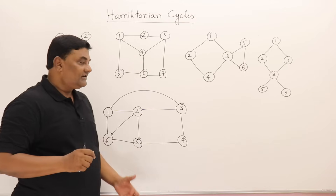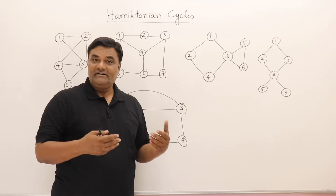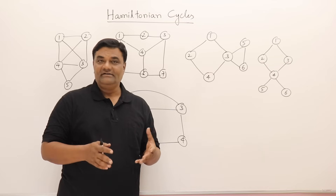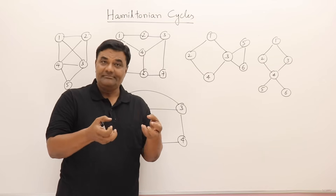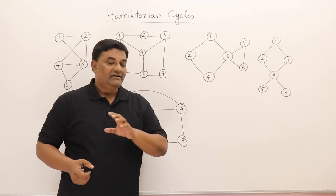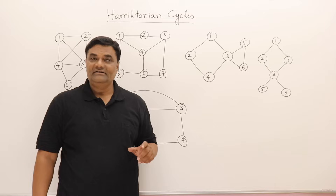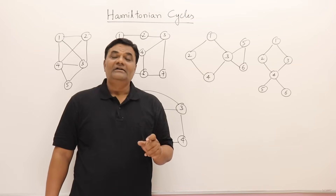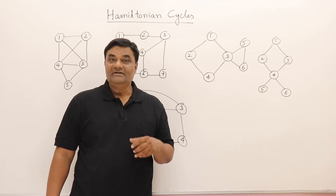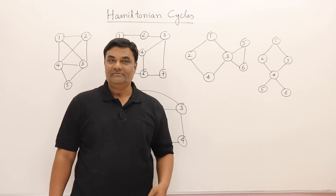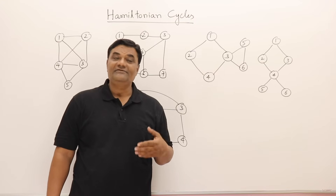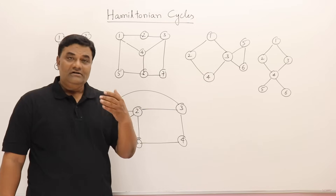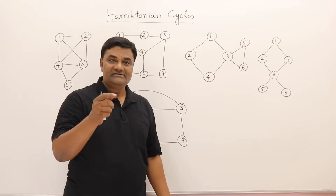The graph given may be directed or non-directed but it must be connected. If it is not connected, meaning if a graph has multiple components, then a Hamiltonian cycle is not possible. Also, this is an NP-hard problem, meaning an exponential time-taking problem, so there is no easy way to find if any Hamiltonian cycle is present.